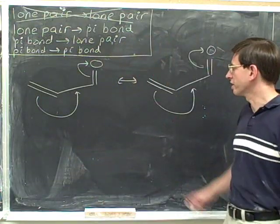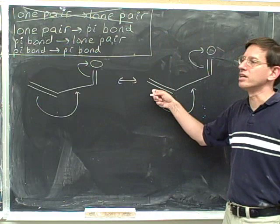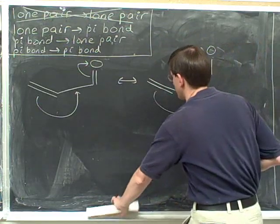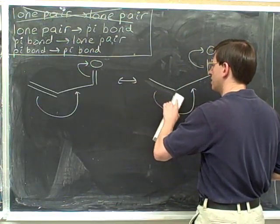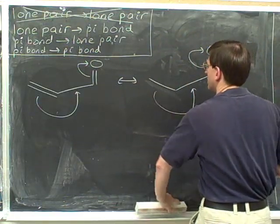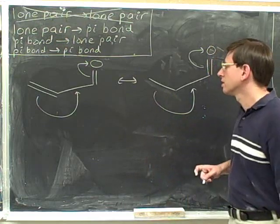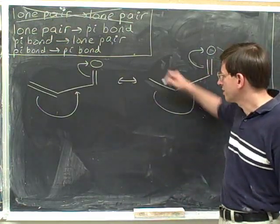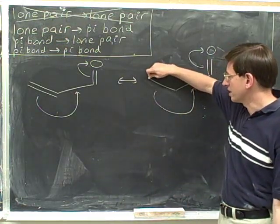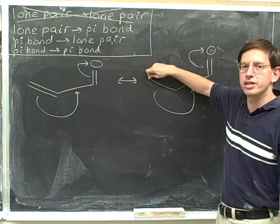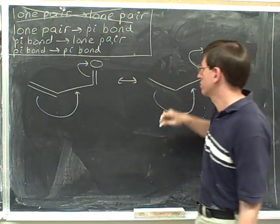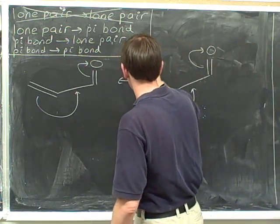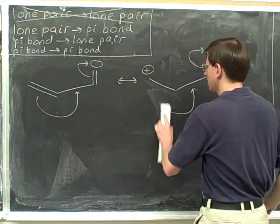We've redrawn the picture and go to the initial tail. It's coming from a pi bond, so we erase the pi bond. We change the charge on the atom at the initial tail — that's this atom here. It started neutral and it's losing electrons, so it becomes positive. Now we can erase the tail.